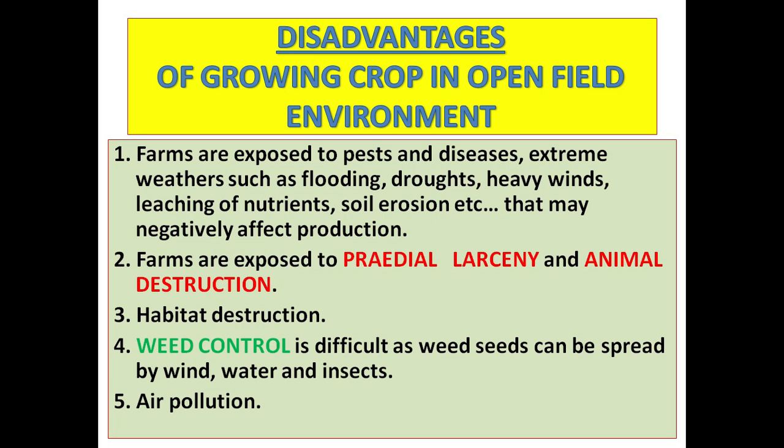Disadvantages of growing crops in an open field environment: number one, farms are exposed to pests and diseases, extreme weather such as flooding, droughts, heavy winds, leaching of nutrients, soil erosion, etc., that may negatively affect production; number two, farms are exposed to larceny and animal destruction; number three, habitat destruction; number four, weed control is difficult as weed seeds can be spread by wind, water, and insects.